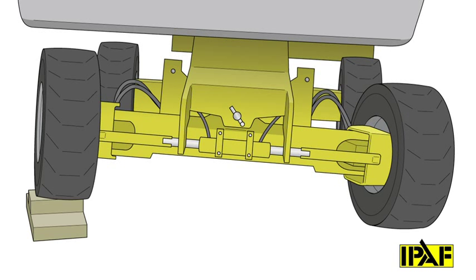Check the basket rotate and level functions. Where oscillating axles are fitted, drive the boom onto a test gradient as per the manufacturer's manual. Check that the oscillating axles are functional and that the wheels remain in contact with the ground.